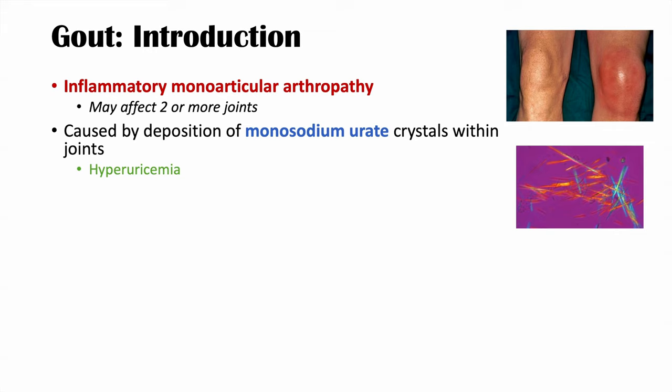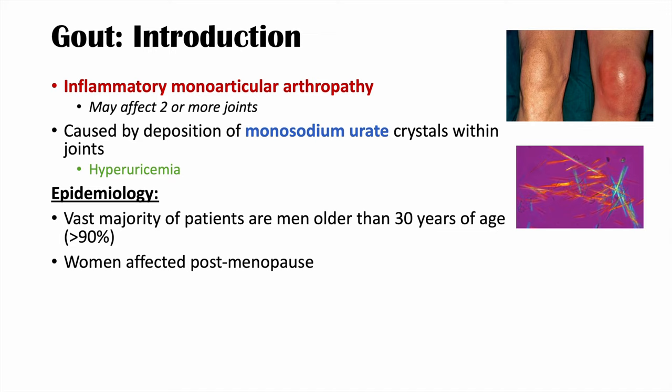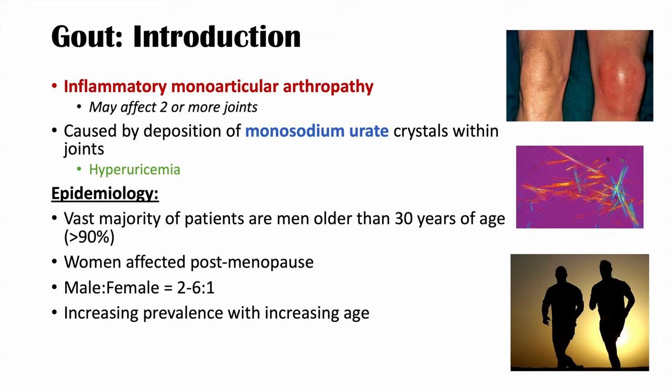Looking at the epidemiology of gout: a vast majority of patients are men older than the age of 30, roughly at least 90% of patients. Women are affected, but oftentimes only postmenopausal. The male to female ratio is two to six to one. As an individual increases in age, the prevalence of gout increases as well, and it is estimated to affect one to 4% of the general population.